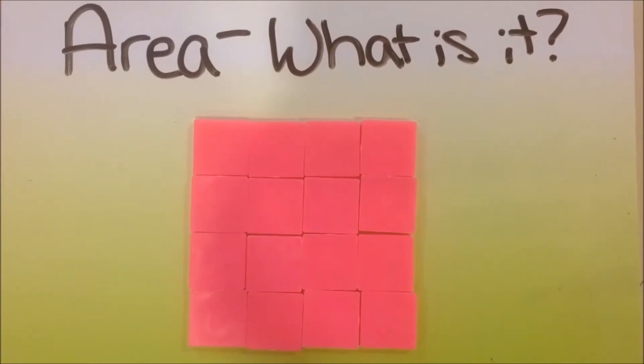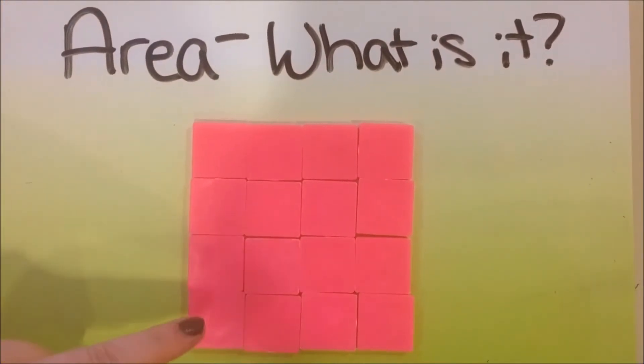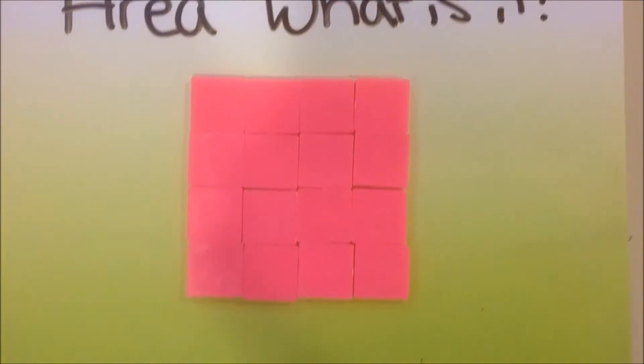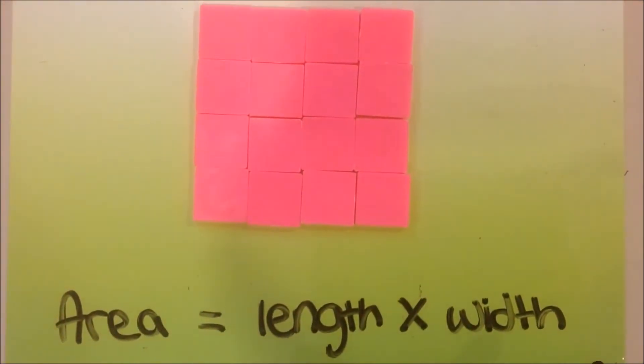So what is area? Area is the amount of space that covers the surface of a shape. For a rectangle, the area is the length times the width.